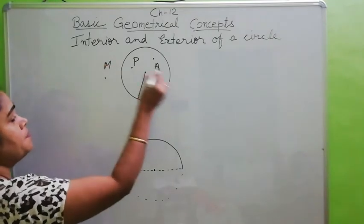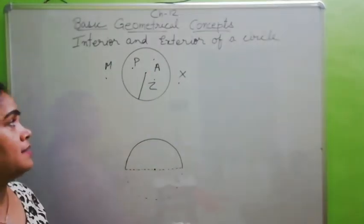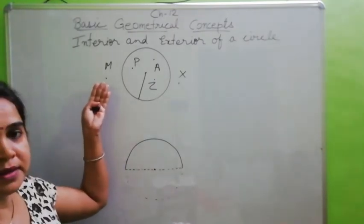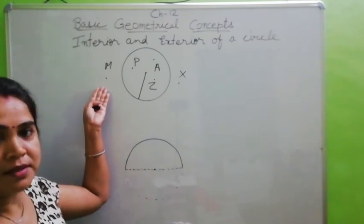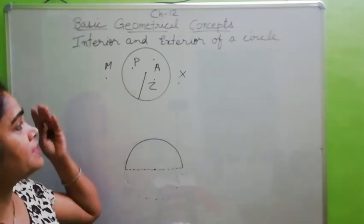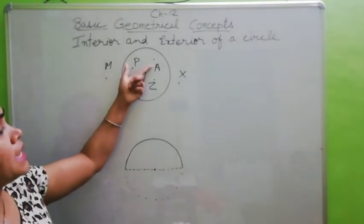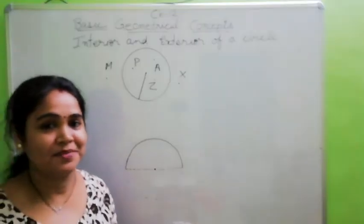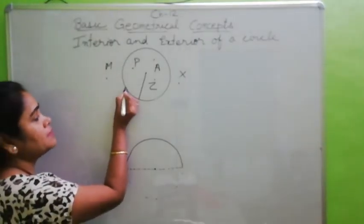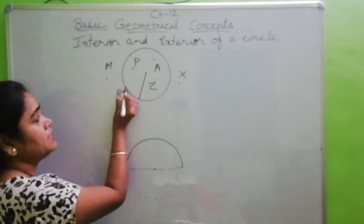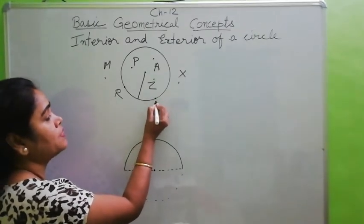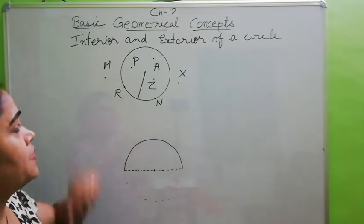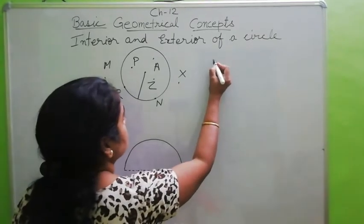Suppose points M and X are outside the circle, so they are called points at the exterior of the circle. Next, if any point like R is here on the circle, or point N is here on the circle, those points are said to be on the circle.